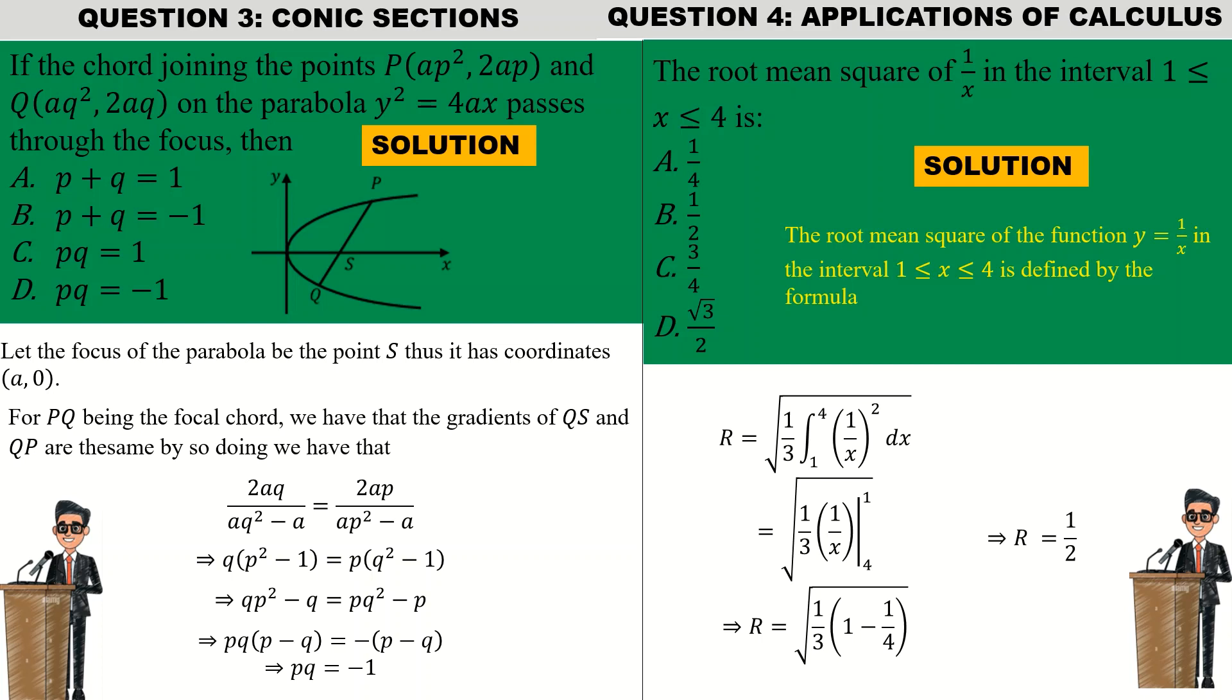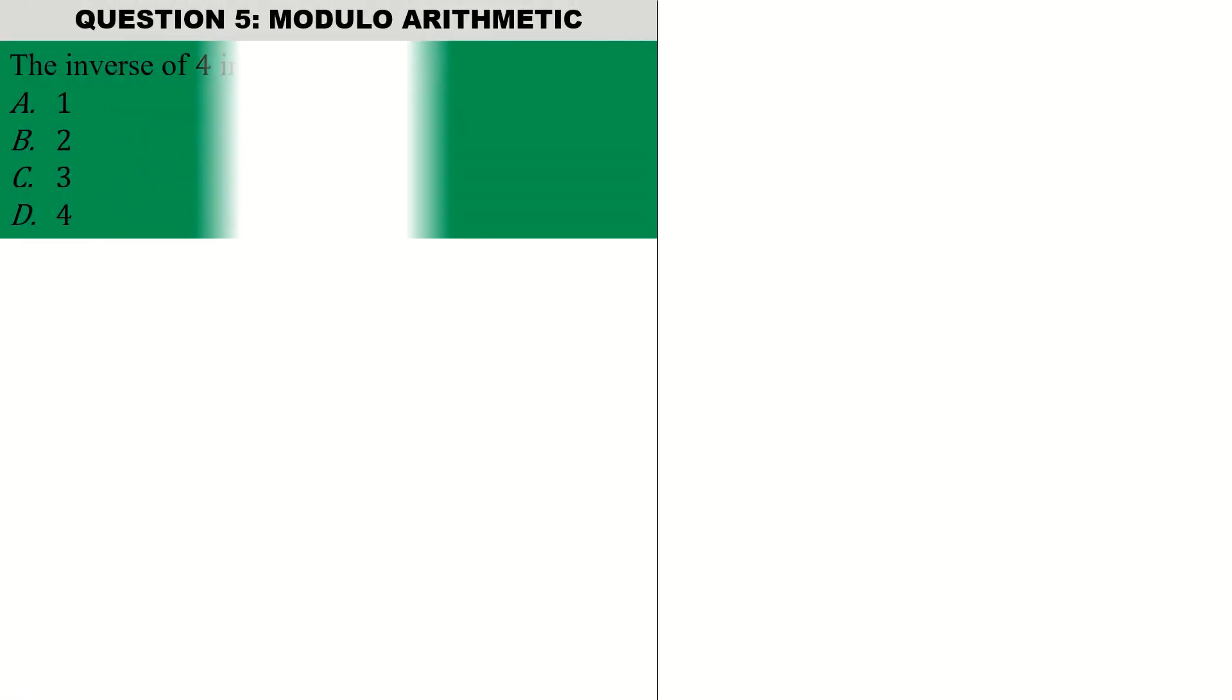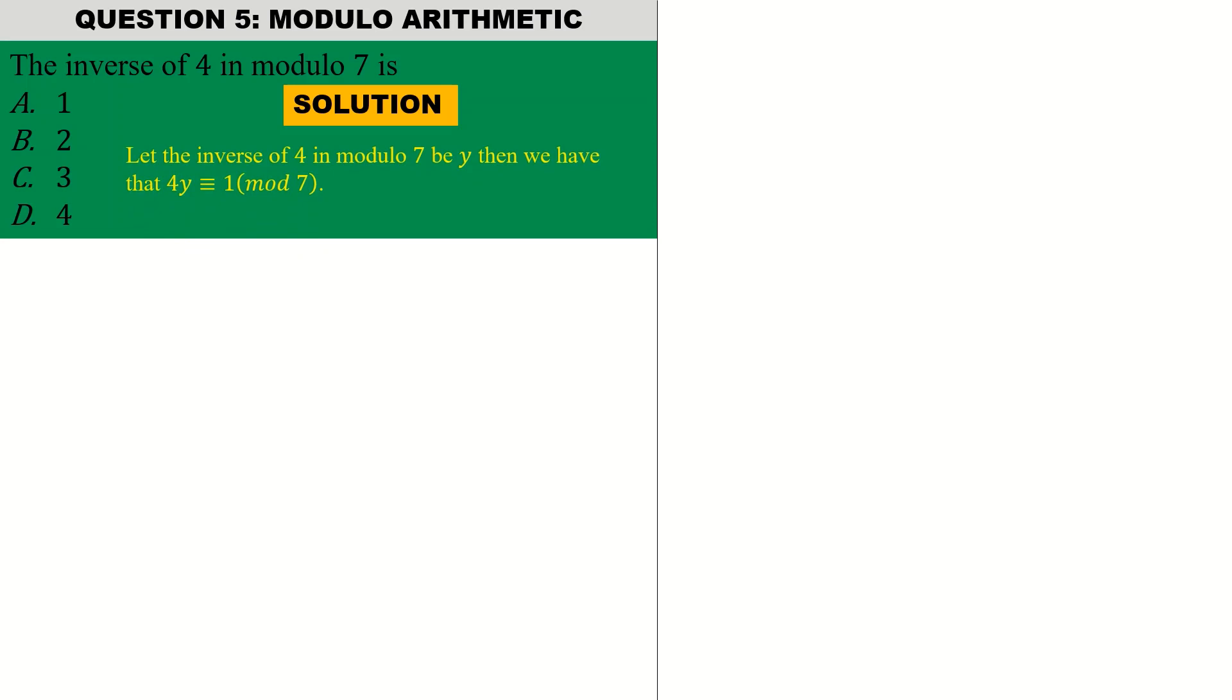Question five is on modulo arithmetic. The question reads: the inverse of 4 in modulo 7 is. The inverse of 4 in modulo 7 is simply a certain number that if you multiply the number by 4, it is congruent to 1 in mod 7. Clearly we see that 4 times 2 is 8, which is congruent to 1 mod 7, hence my inverse of 4 in modulo 7 is 2. Option B is correct.